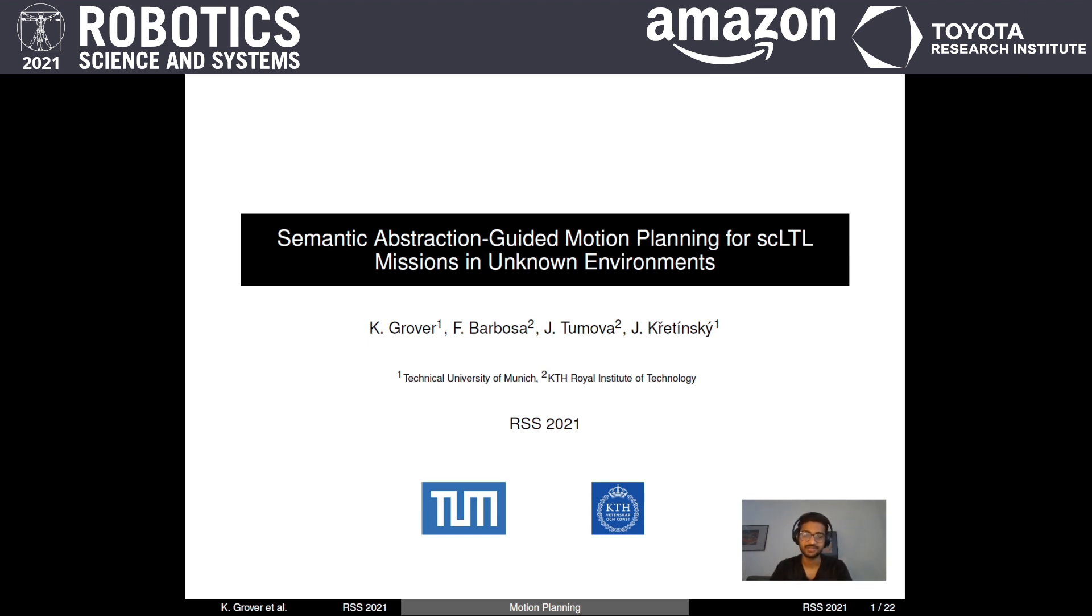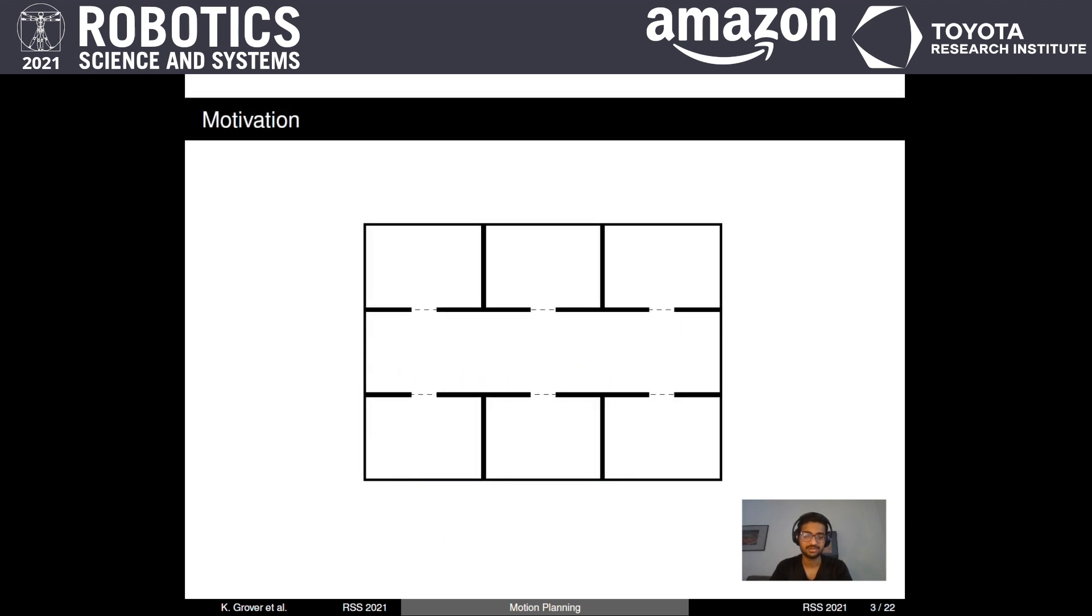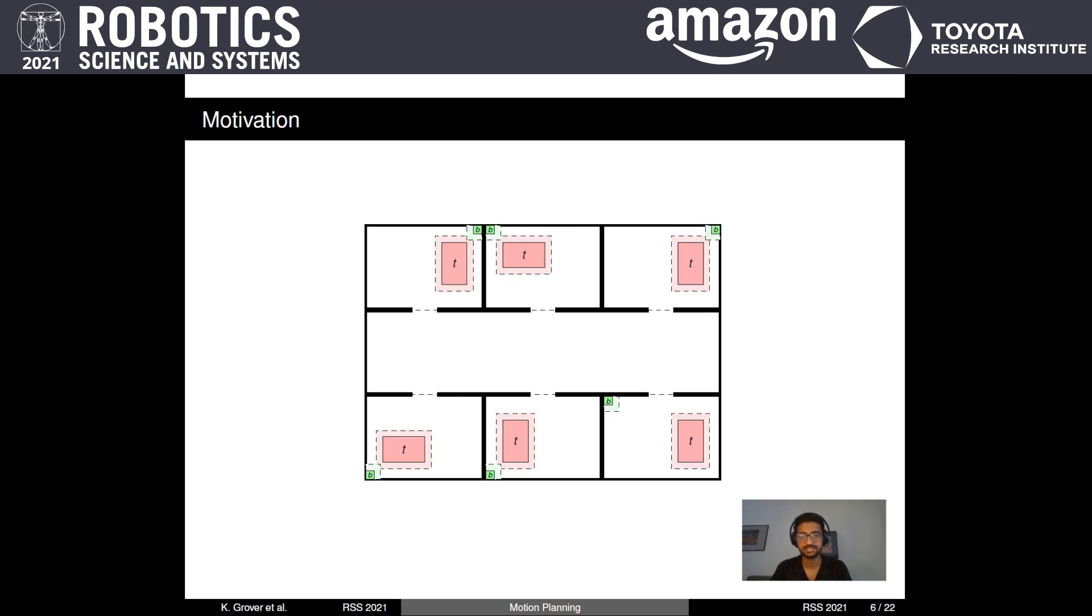Let's start with a motivating example. Look at this office-like environment consisting of six rooms and a hallway. Let's put some tables in the rooms and some bins near the tables. We also define a semantic labeling of the environment. For example, if a robot is near a table, the atomic proposition t is true.